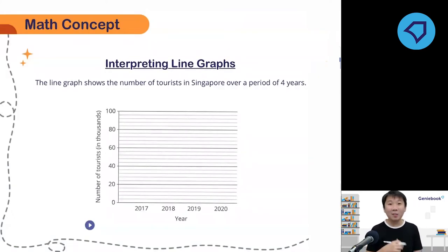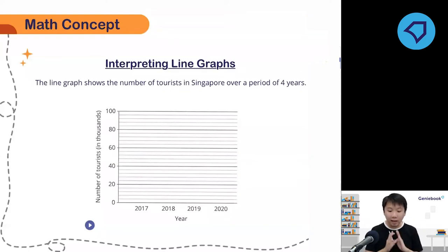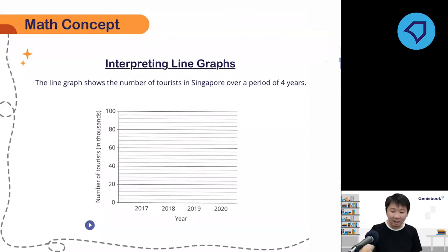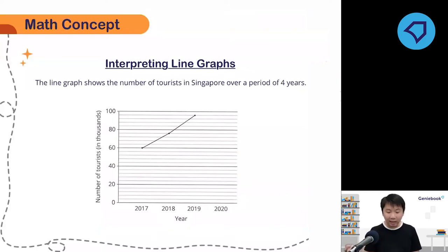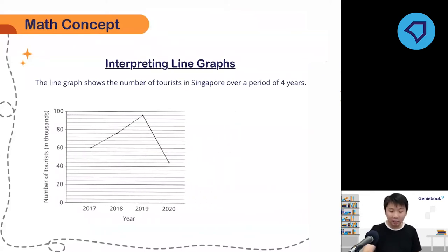Let's take a look at this particular example here. We're going to talk about interpreting line graphs first. This line graph shows the number of tourists in Singapore over a period of four years. Look at this animation and see what the numbers are like. We have 2017, and they went up to 2018, up again in 2019, and sadly something happened in 2020 and it decreased.